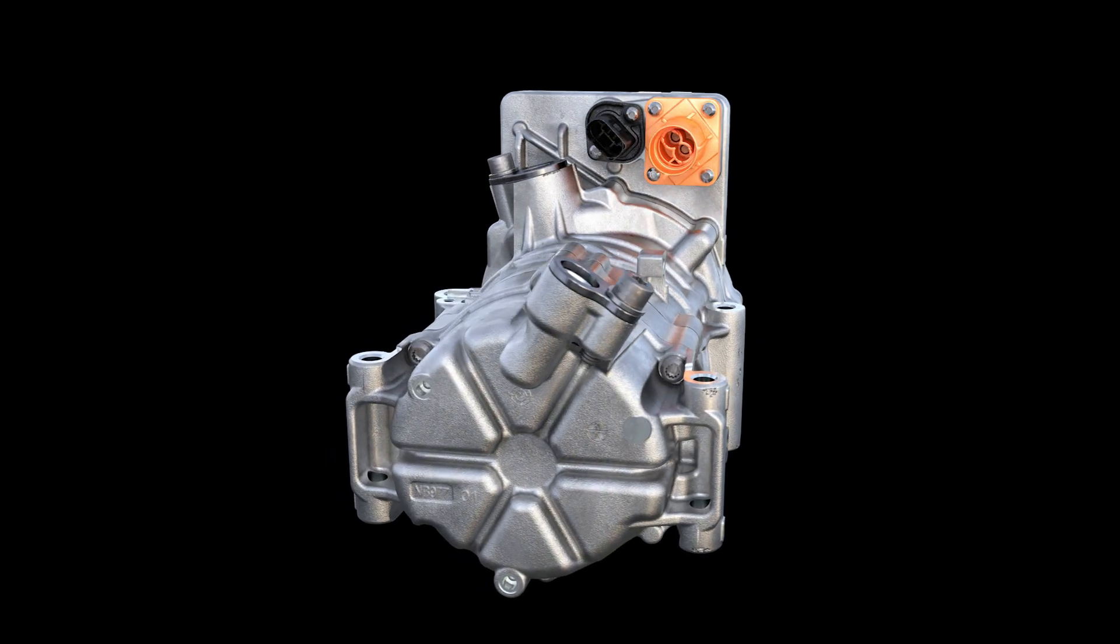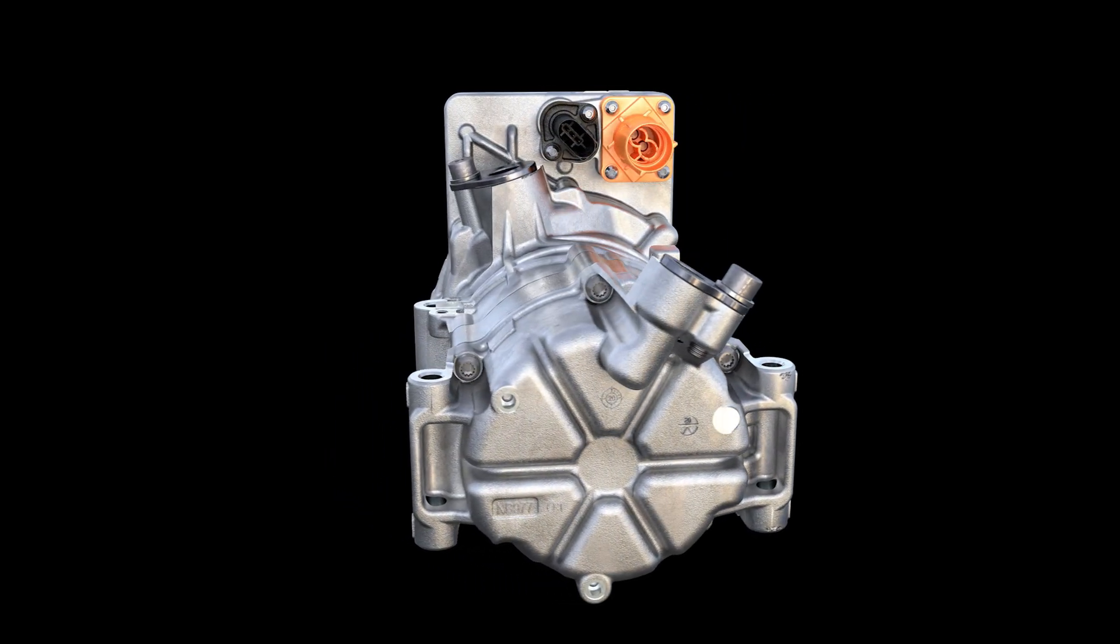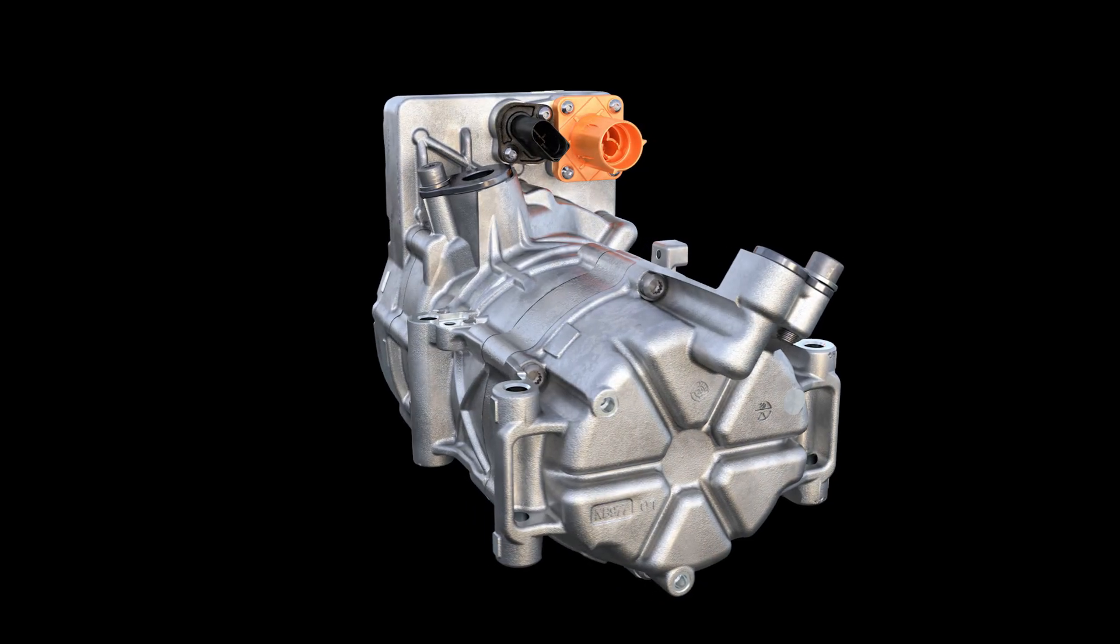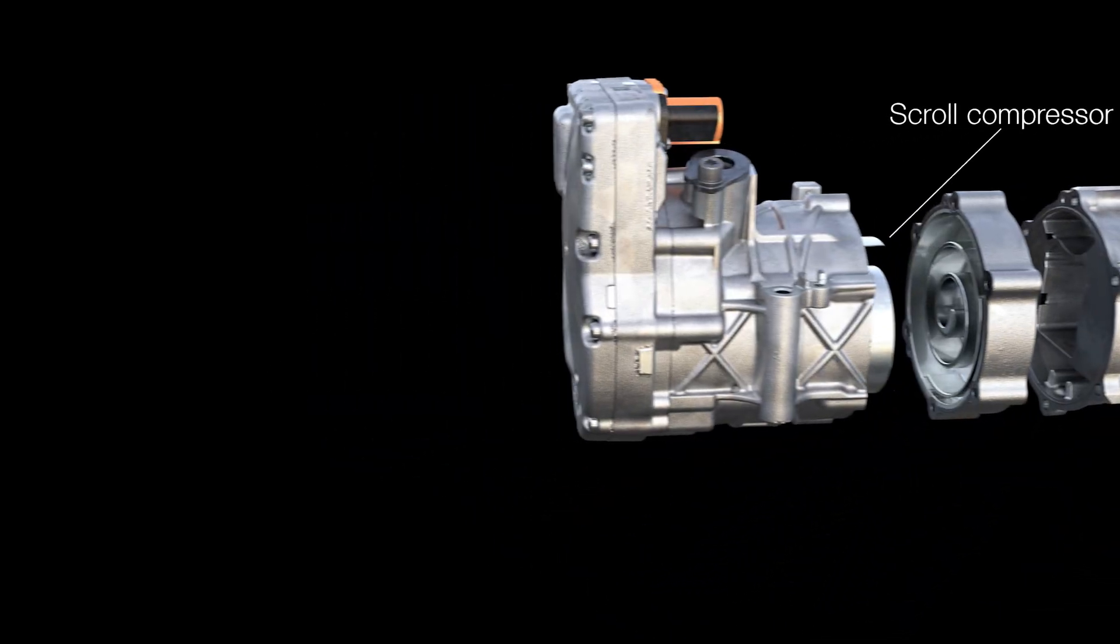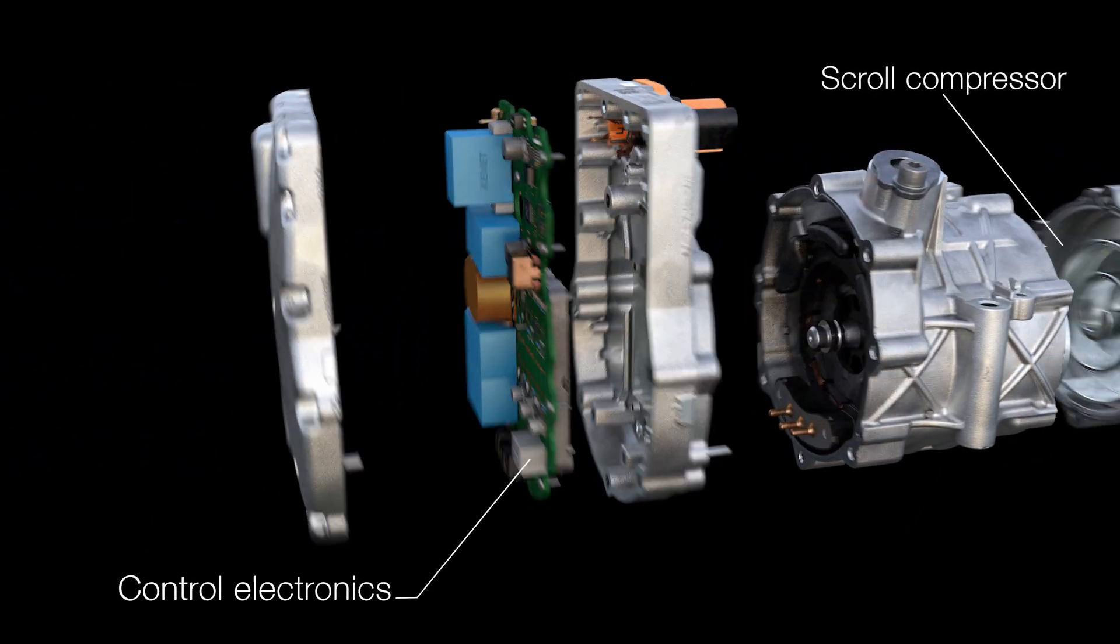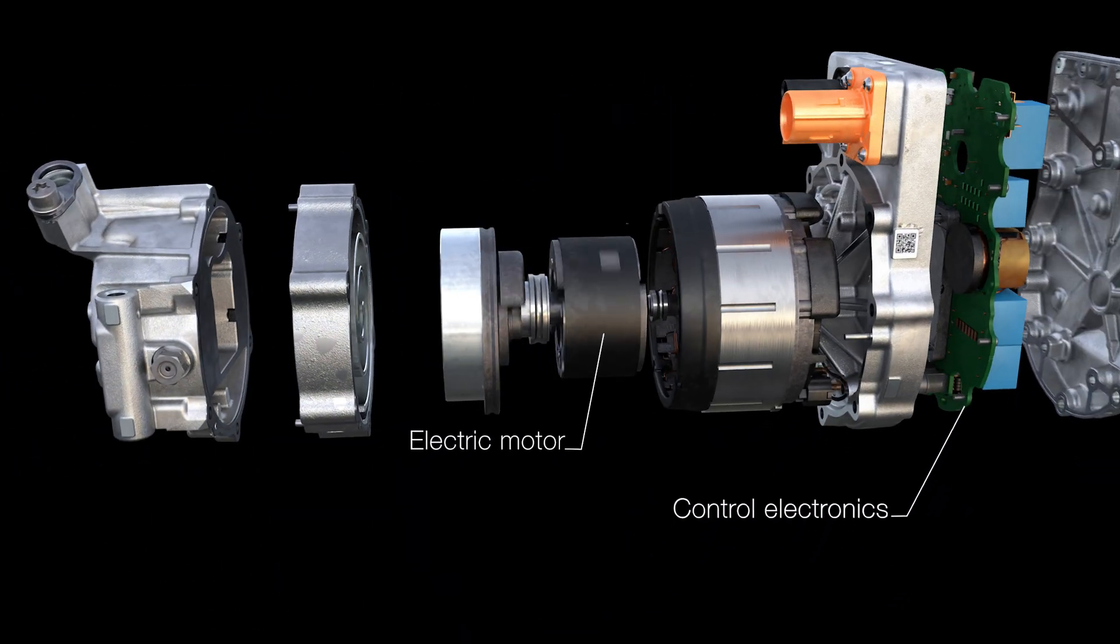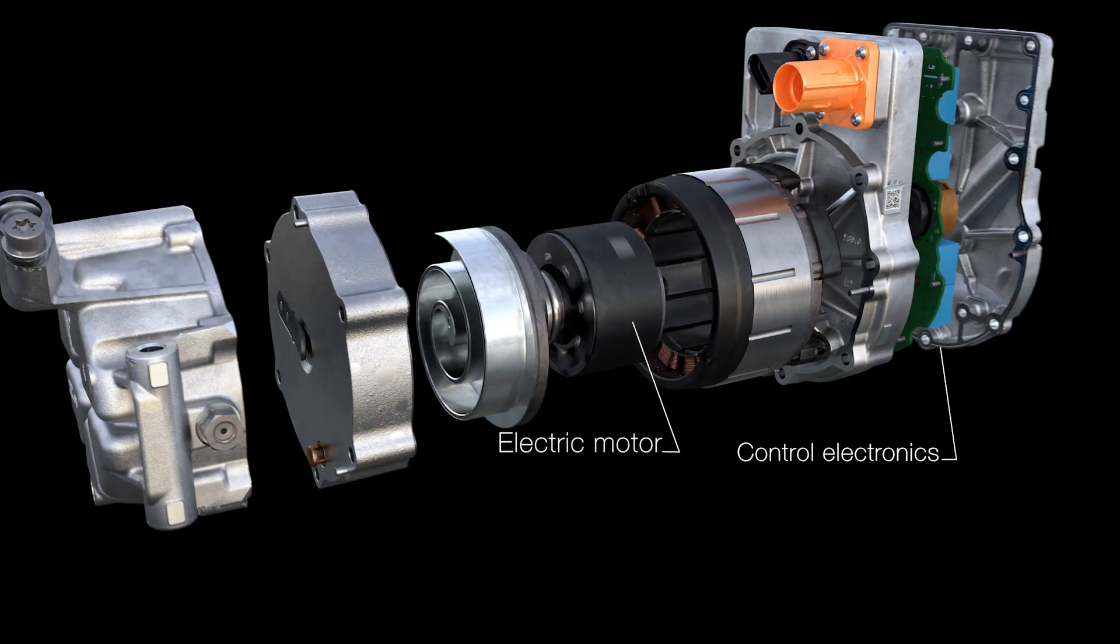Because a piston compressor would be too noisy for an electric vehicle, a scroll compressor is used. The power electronics control the electric motor in a range from 600 to around 9,000 revolutions per minute.